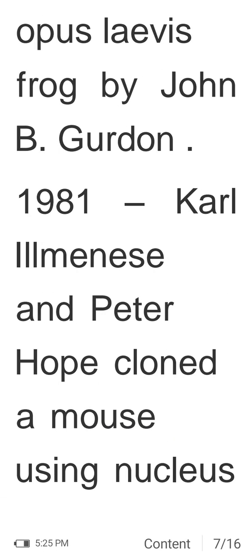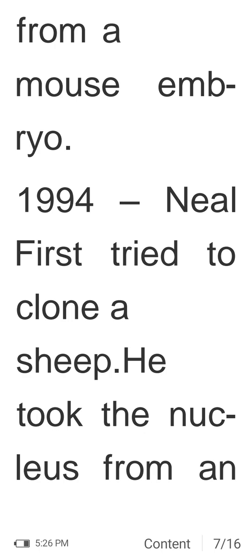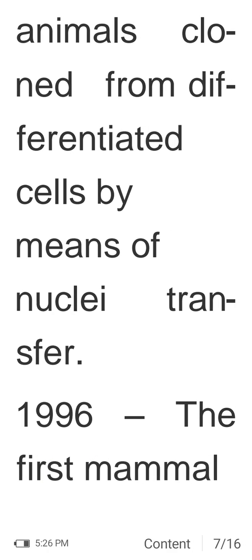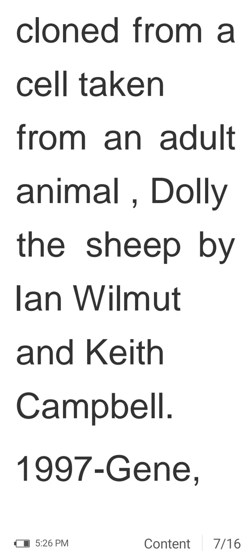In 1952, Robert Briggs and Thomas King attempted to clone the frog Rana pipiens. In 1970, John B. Gurdon cloned Xenopus laevis frog. In 1981, Karl Illmensee and Peter Hoppe cloned a mouse using a nucleus from a mouse embryo. In 1994, Neal first tried to clone a sheep using the nucleus from an embryonic cell. In 1995, two sheep were cloned — the first animals cloned from differentiated cells by means of nuclear transfer.